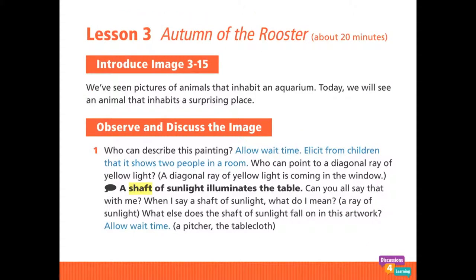Each new word is introduced in a context sentence. New words are highlighted in yellow — in this case, the word shaft is introduced. The context sentence is shown in boldface and is preceded with a speech balloon. Notice how the teacher introduces the image. The script reads: 'We've seen pictures of animals that inhabit an aquarium.' In this case, both the words inhabit and aquarium are review words. Students are encouraged to repeat the new word in its context sentence.